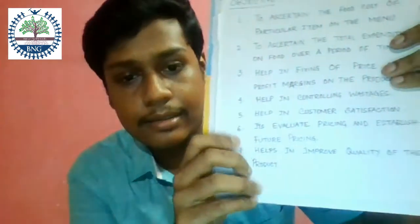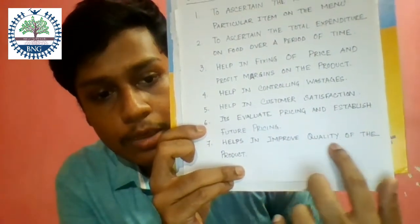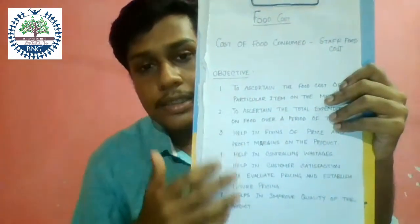The last objective is that it helps in improving the quality of the product. Just like when you control your wastage, you can reuse that wastage cost for developing your product. Those are the objectives for food cost calculation.